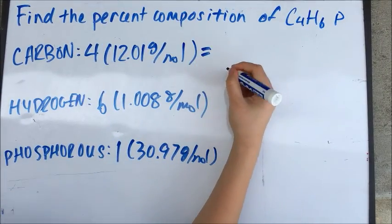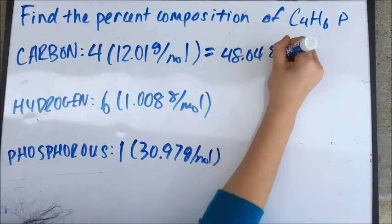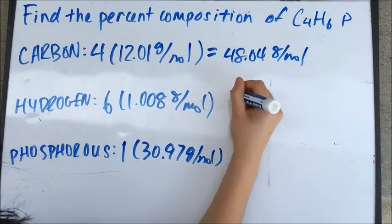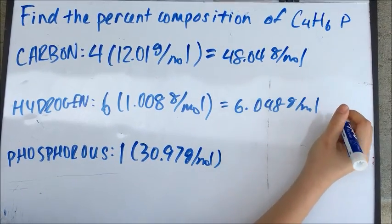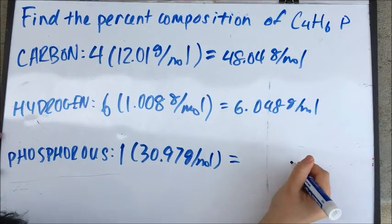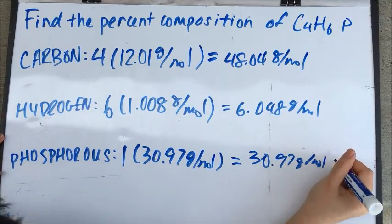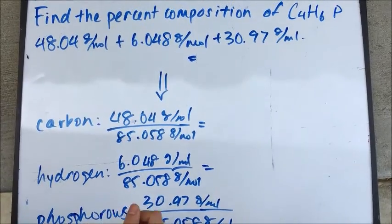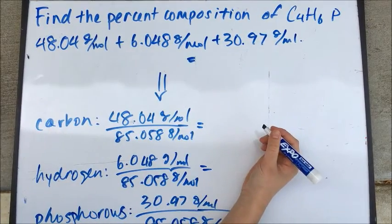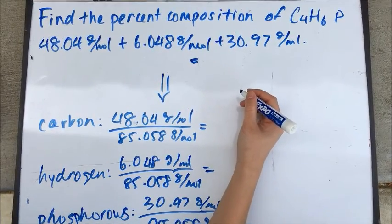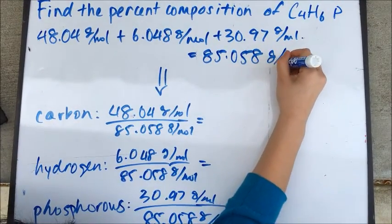When you multiply these out, you get 48.04 grams per mole of carbon, 6.048 grams per mole of hydrogen, and 30.97 grams per mole of phosphorus. When you add the total molar masses of all the elements, you get a total molar mass of the compound of 85.058 grams per mole.